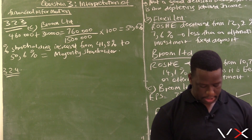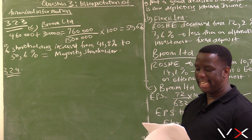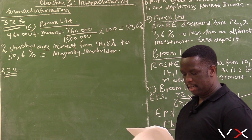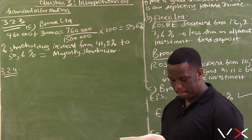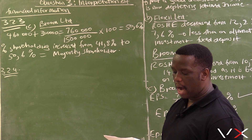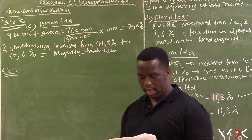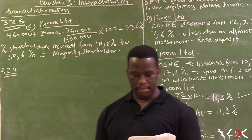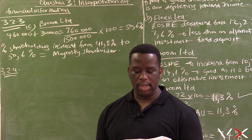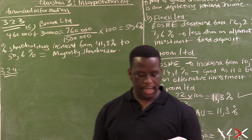Financing strategies and gearing: the directors of each company have taken deliberate decisions that are reflected in their cash flow statement. Explain the decisions taken by the directors of Broom Ltd and how these will benefit the company. Also explain how the decisions taken by Flexi Ltd affected the risk and gearing of the business.